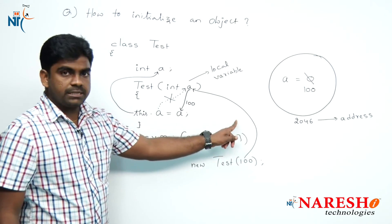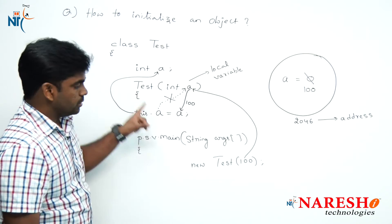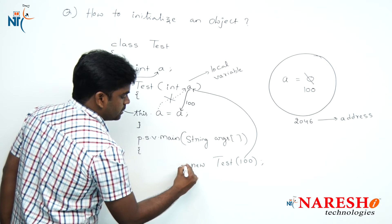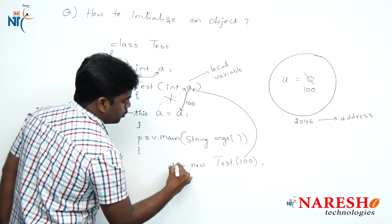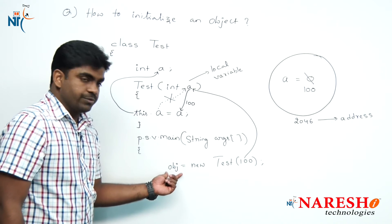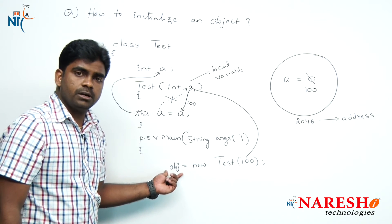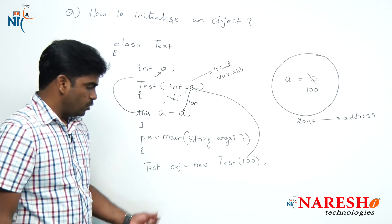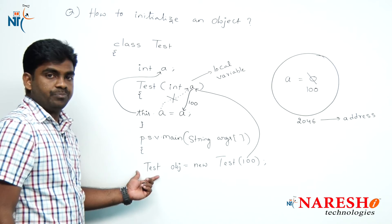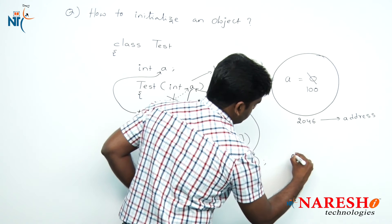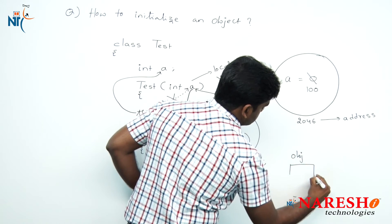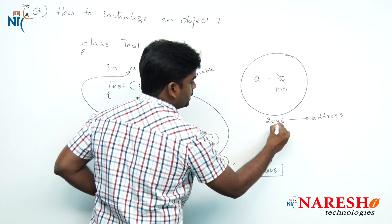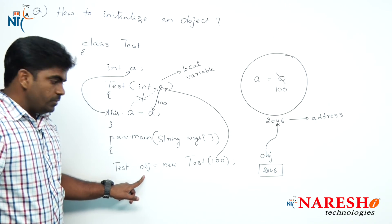After object initialization, once constructor execution is over, the control returns and the constructor returns the address of the object, which we collect into a variable. Suppose OBJ — this is the object reference variable. The object reference variable is of class type; OBJ is a class type variable. OBJ gets memory allocation somewhere and holds the value 2046, which is the object address, so it starts pointing to this object.